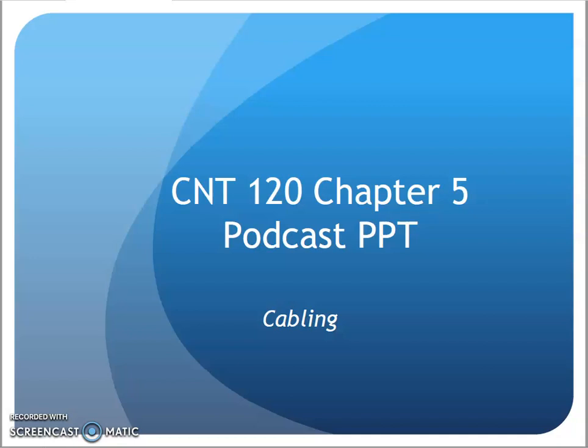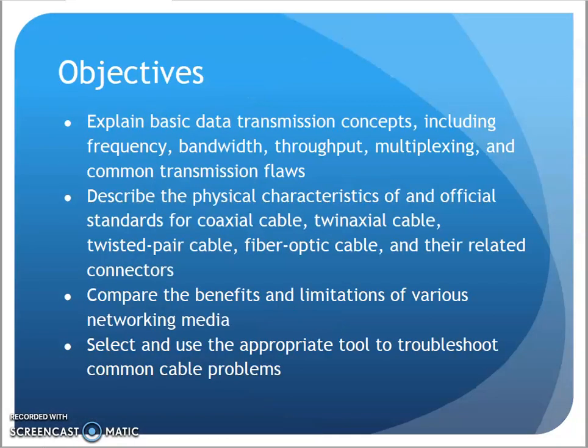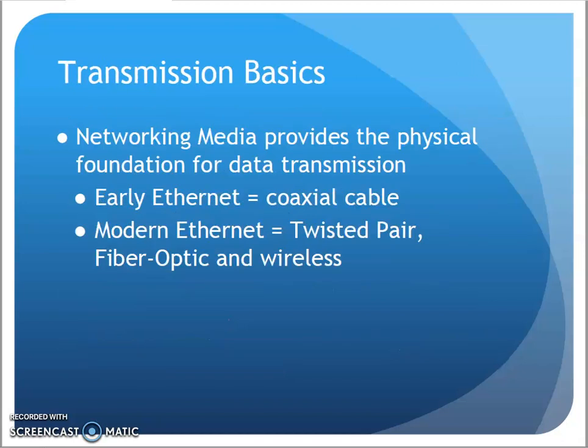Hi, it's CNT 120. We are working on chapter 5 on cabling. This chapter we're going to talk a little bit about signals and different types of media, mainly twisted pair and fiber optic, a little bit about coax, and then also some troubleshooting tools towards the end. With networking medium, this is the physical layer — the physical foundation of our data transmission. Our early Ethernet networks used coax cable, and our modern Ethernet networks use twisted pair with fiber optic and wireless.